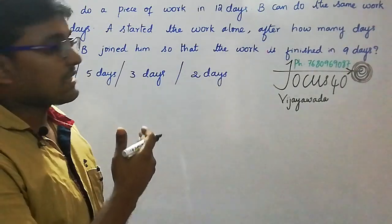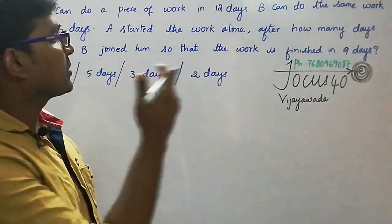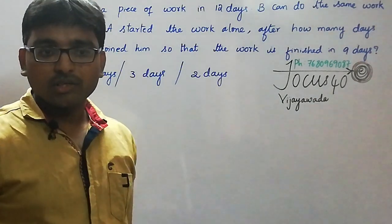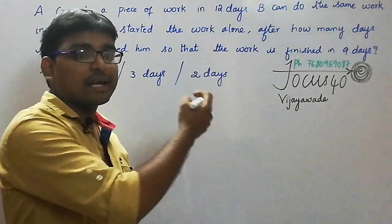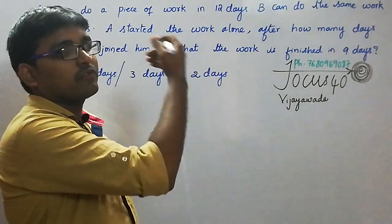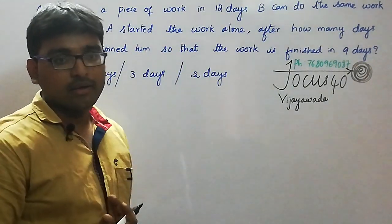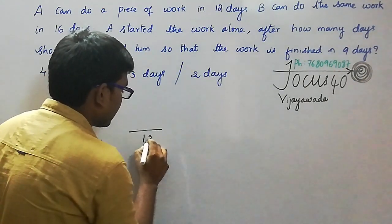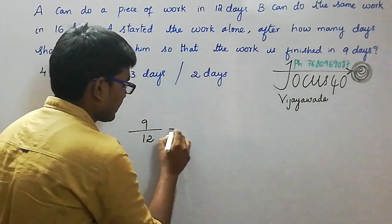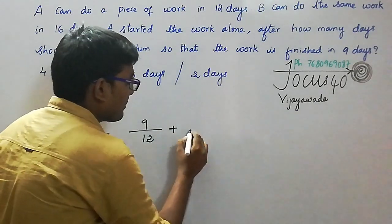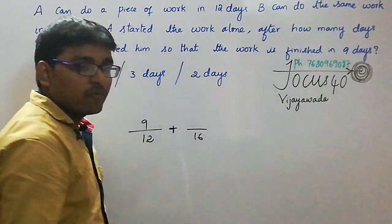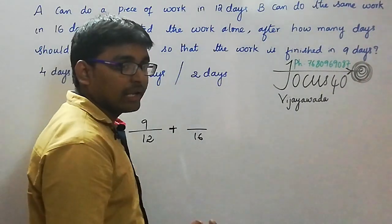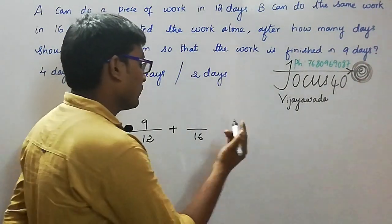We will go through the shortcut process now. A's total days is 12 and B's total days is 16. A started and stayed to finish the work from start to end, so A worked for 9 days. A's capacity is 12, he worked for 9 days, and B's capacity is 16. We need to calculate how many days B worked — let that be x.